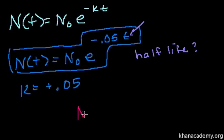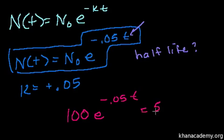We're starting with N₀, our initial value. Let's use 100 to keep things less abstract. I'm just picking 100 arbitrarily. So we start with 100 times e to the minus 0.05t. After one half-life, we'll have half of this left, so this should equal 50.